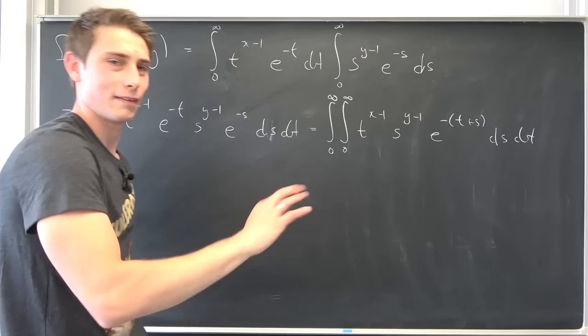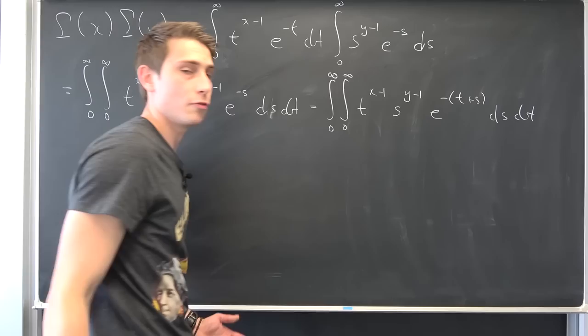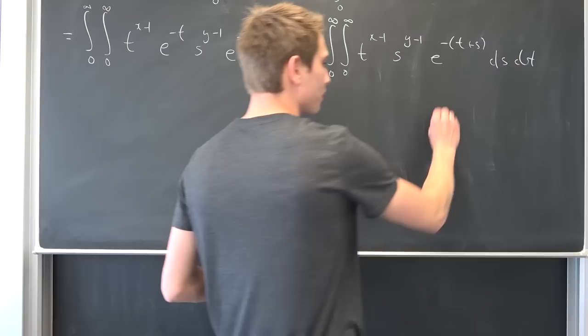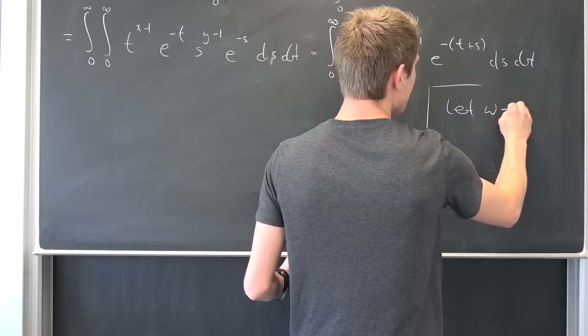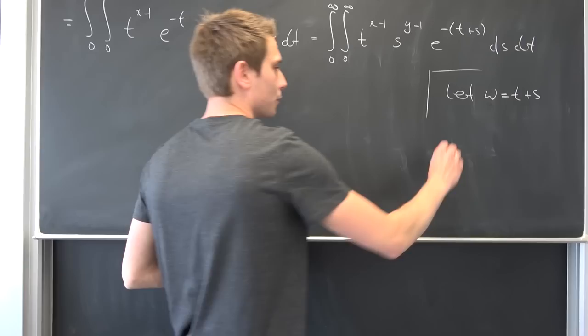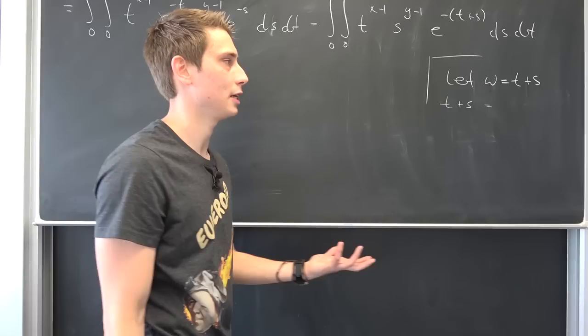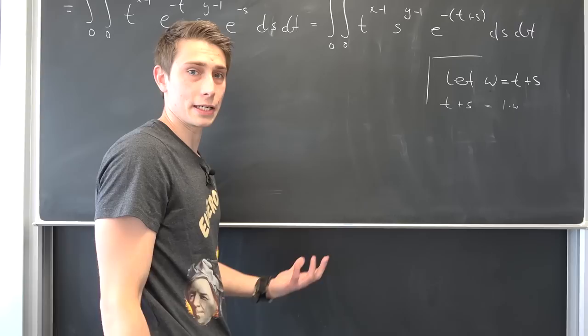Now we would like to do some multivariable calculus. Why not substitute a new variable equal to t plus s? Let omega be equal to t plus s. That's only one variable. Why not rewrite omega a little bit as motivation for the change of variable? t plus s is nothing but 1 times omega. And we are going to introduce our second variable of integration: tau.